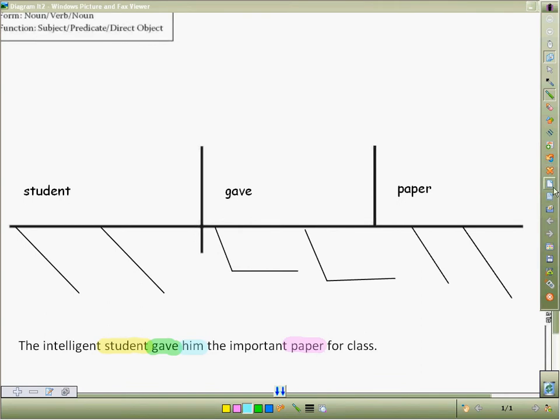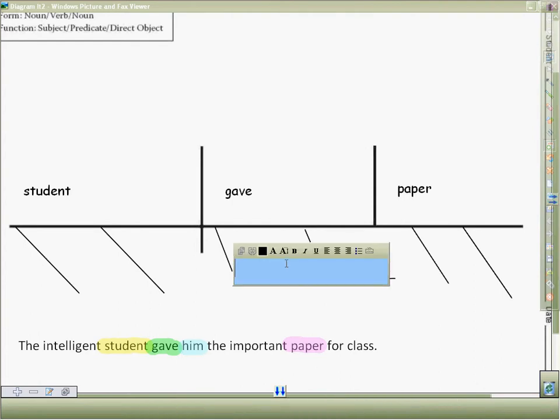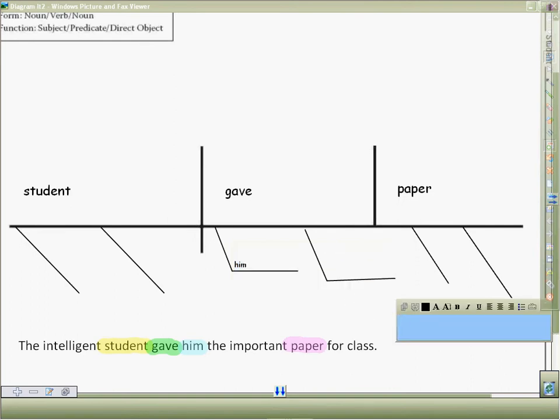Now when we're doing the indirect object, we need to put the indirect object on the bracket. There's nothing here like when you do a prepositional phrase. We just put the indirect object down below. So we put him, which we will make smaller so that it will fit on here well. And write him.